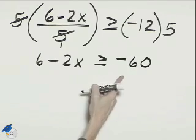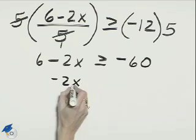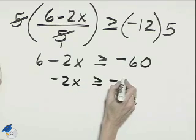Now we can subtract 6 to the right. We'll have negative 2x greater than or equal to negative 66.